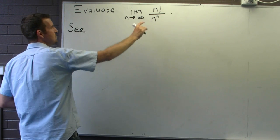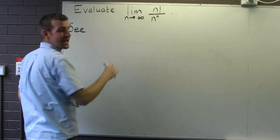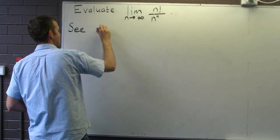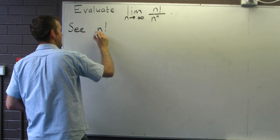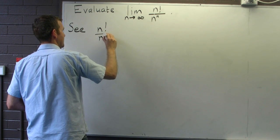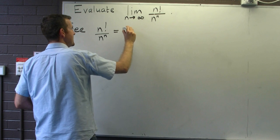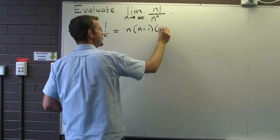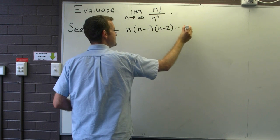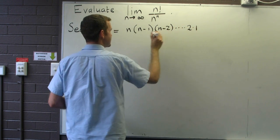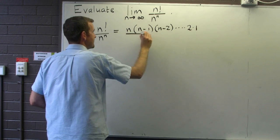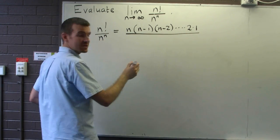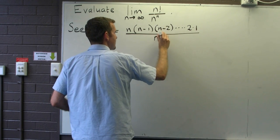So the first thing I'm going to do is to expand the n factorial. Okay, so n factorial is just n times n minus 1, n minus 2, down to 1. And n to the power of n, I'm just going to leave that as it is.